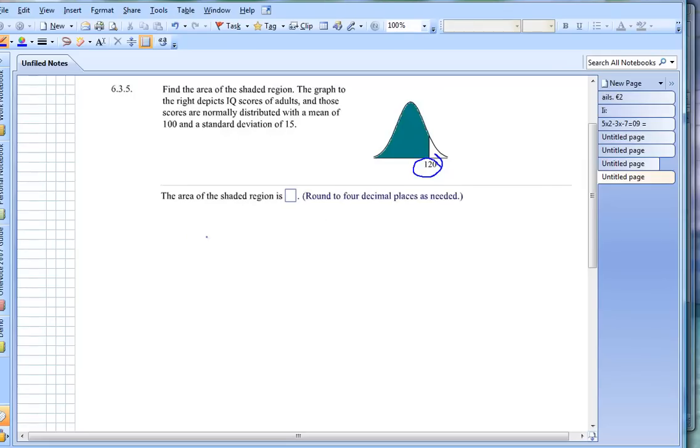What you're really asking in this problem is to find the probability that x is less than 120. Why do I say less than? I say less than because it's shaded to the left. This area over here is shaded to the left of our 120. So that's why it's less than.